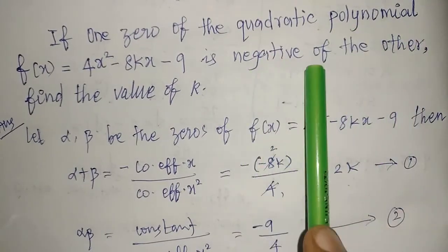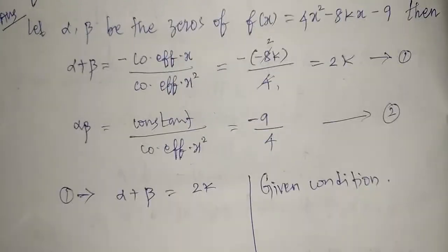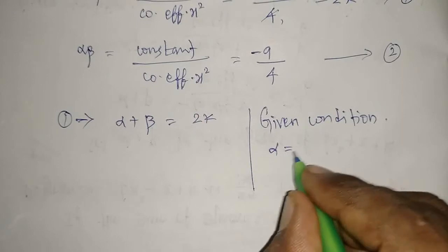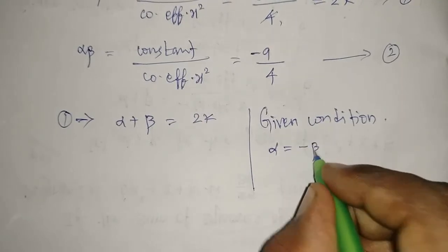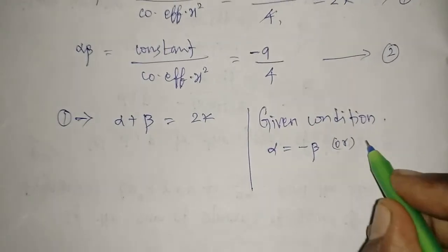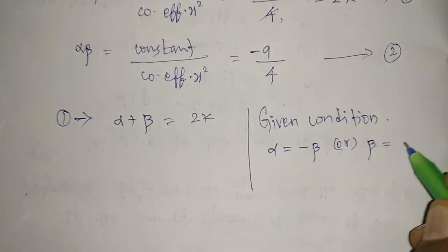So we have two conditions. If you take one zero, which is equal to negative the other they said, or else if you take beta, this is equal to negative the other. Any one you can use, no problem.